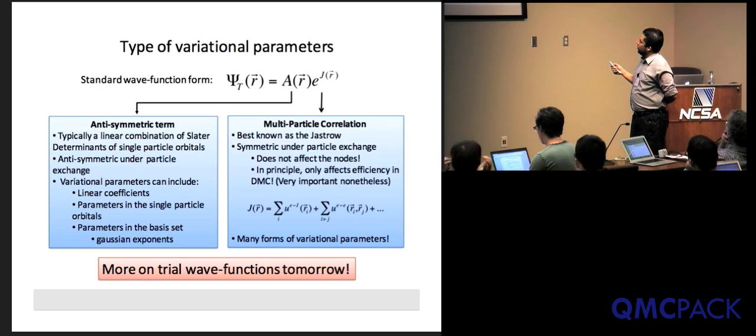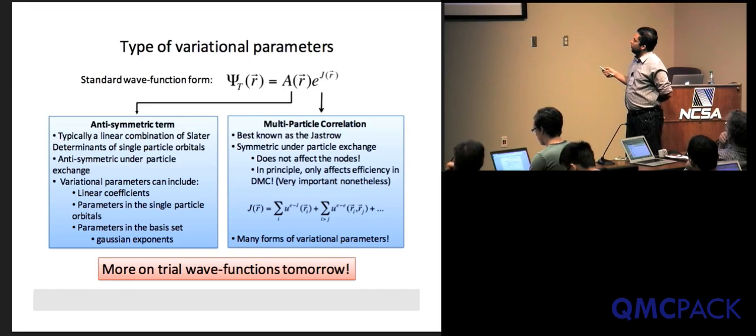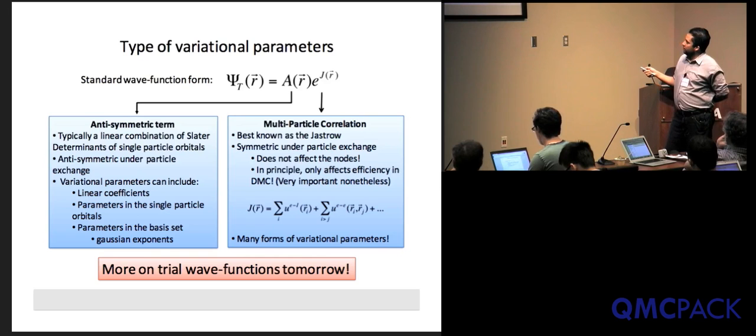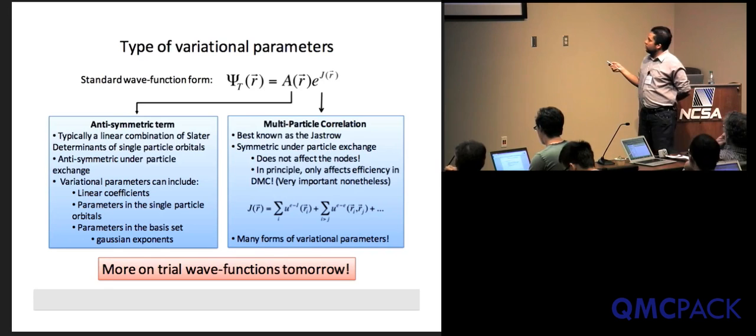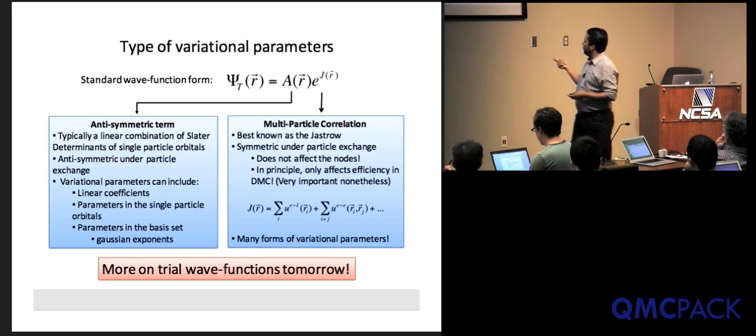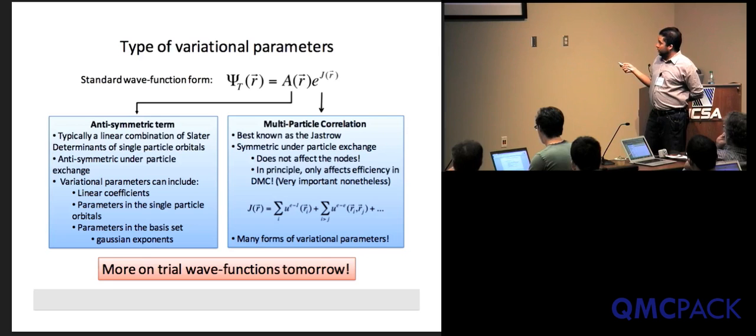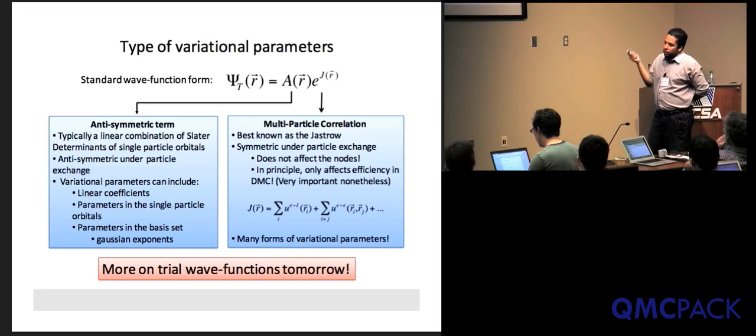The Jastrow looks like a sum of terms, and every term is a fairly generic correlator. You can correlate one electron at a time — this would be an electron-ion term — or two electrons, or three, and so forth. Each correlator becomes a completely generic function of one, two, three or more positions. People typically do three-body correlations by default. Note that these parameters are in the exponent, which makes things somewhat complicated.